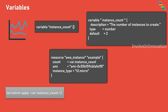Variables have configurations such as description, to describe the variable, and a type attribute for the Terraform data type. Terraform supports different data types such as strings, numbers, lists, maps, and boolean. Here the instance_count data type is number and the default value is 2. This can be overridden using command-line flags, environment variables, or variable definition files. Terraform also supports remote state backends that can store and manage variable values securely.